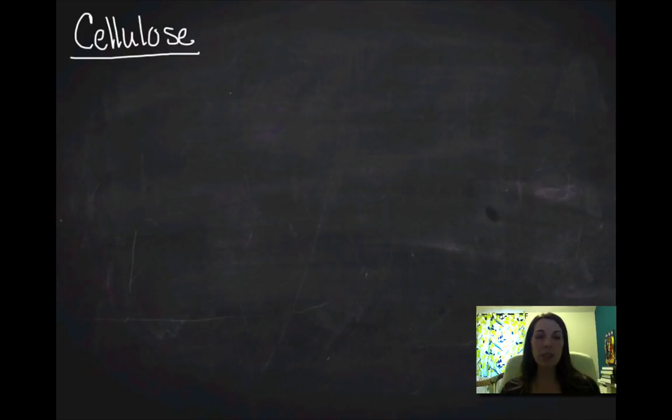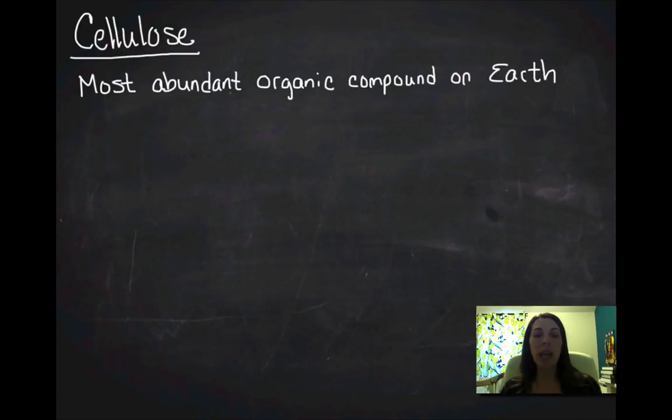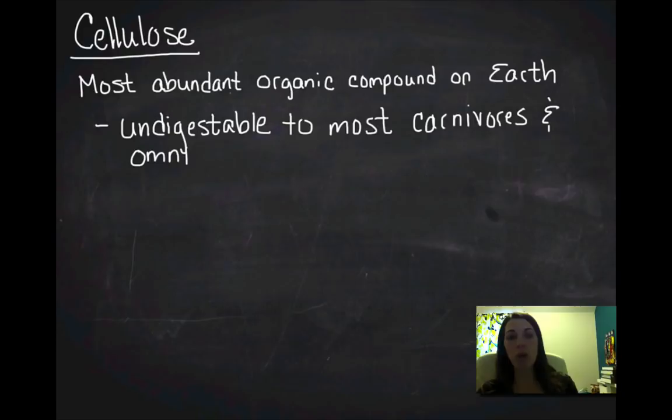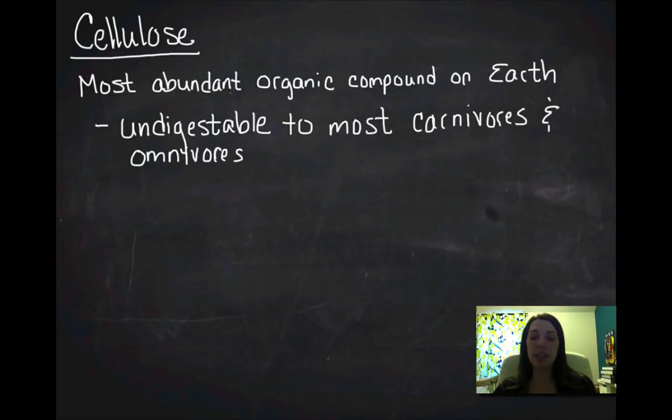So that's that. I do want to talk about cellulose a little bit more. Cellulose, you're all very familiar with cellulose. Cellulose is the most abundant organic compound on earth. And that's because plants make up the majority of the biomass on earth. And cellulose is actually the structural component of their cell walls. And cellulose is undigestible to most carnivores and omnivores. However, most herbivores actually can digest it. And it's because, so cows can, but humans can't.